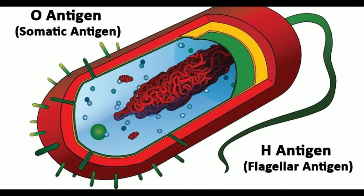Point 6: Regarding alcohol sensitivity — O antigen is resistant to alcohol; H antigen is sensitive to alcohol. Point 7: Regarding formaldehyde sensitivity — O antigen is formaldehyde labile; H antigen is formaldehyde stable. Point 8: For extraction — trichloroacetic acid is used for extraction of O antigen. Since this property was first shown by Boivin, O antigen is alternatively referred to as Boivin antigen. Formaldehyde is used for extraction of H antigens.